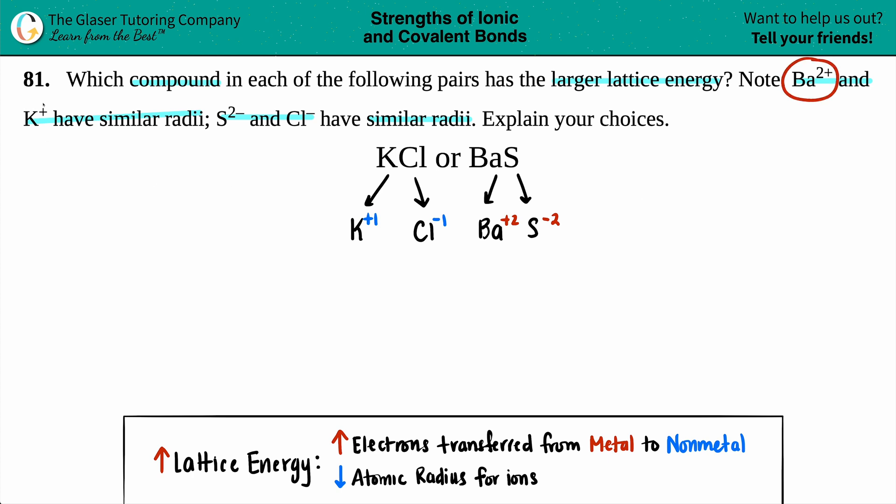They gave us a note: Ba2+ and K+ have similar radii, so I'm grouping these together. They also said that S2- and Cl- have similar radii.